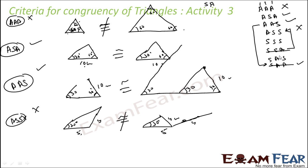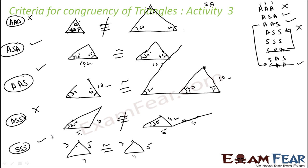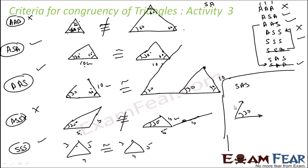Next is SSS — all three sides equal. Drawing two triangles with sides 3, 4, and 5, you can see they are congruent — which we also verified in the previous example. So SSS holds. Finally, SAS — two sides and the included angle. With sides 4 and 3 and an included angle of 30 degrees, since the lengths are fixed, only one triangle can be drawn, and they will be congruent. So SAS also holds.